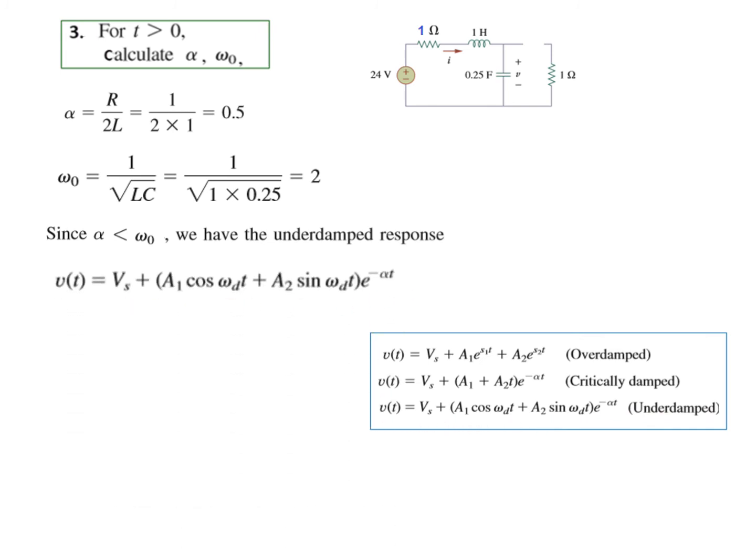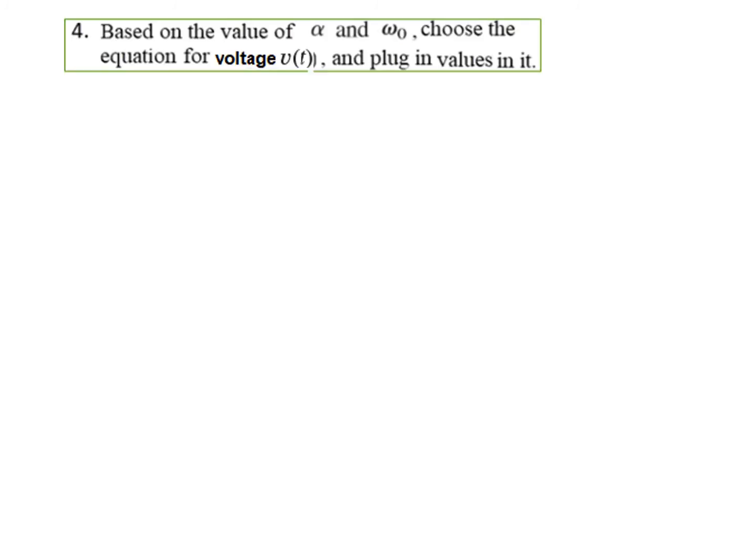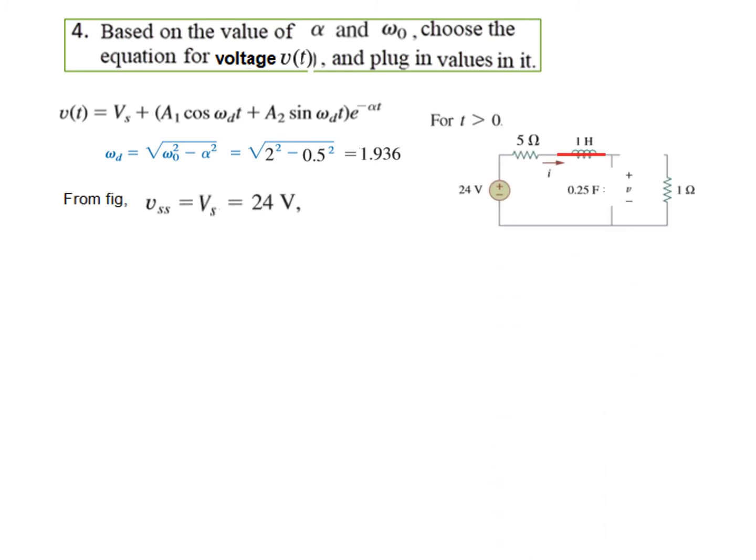So this is our general equation. We will proceed with this. General equation. We need to find omega d. We need to find Vs. And we have already found alpha. So omega d putting in this formula comes to be 1.936. And Vs, again the circuit is in steady state condition. Inductor short circuit, capacitor open. So the capacitor is charged to the supply voltage, 24 volt. So this is 24 volt. So this is our equation.